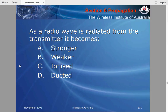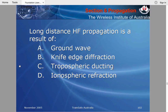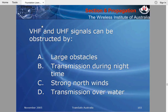Here are some exam questions: A radio wave radiated from a transmitter becomes — weaker. Long-distance HF propagation is the result of ionospheric refraction — the key word is HF. For VHF or UHF it would be tropospheric ducting. VHF and UHF signals can be obstructed by large obstacles — for example, a large bus pulling alongside your car can shield you from a repeater, causing you to lose the signal.